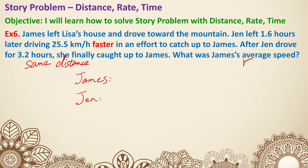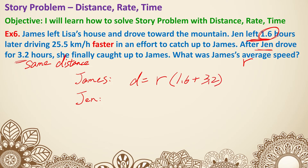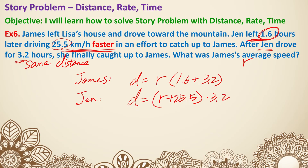Let R equal James' average speed. James' distance equals R times (1.6 plus 3.2), because James drove 1.6 hours before Jen left and then both drove 3.2 hours together. For Jen, her rate is R plus 25.5, and she only drove for 3.2 hours, so Jen's distance is (R plus 25.5) times 3.2.